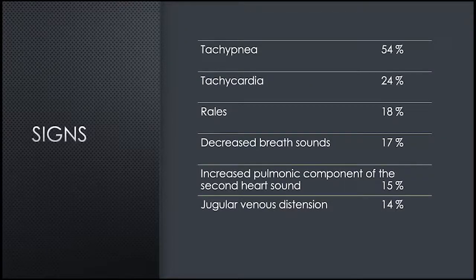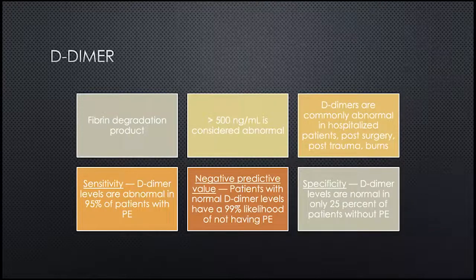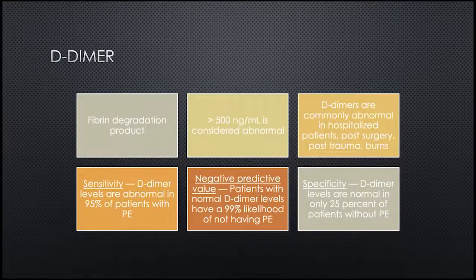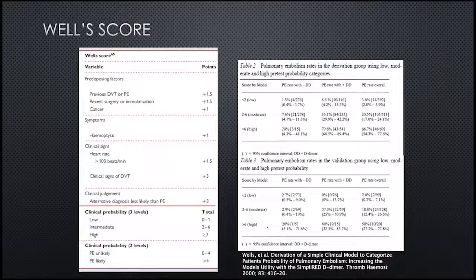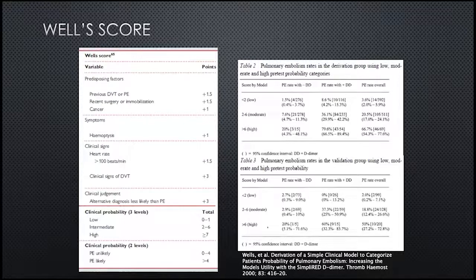Signs can include tachypnea, which is most common, tachycardia, rales, decreased breath sounds, et cetera. The D-dimer is often drawn in the emergency department. Its negative predictive value is very high, and the sensitivity is also very high, but specificity is unfortunately low. We also shouldn't be drawing D-dimers in patients who have had recent surgery, trauma, or burns. Dr. Wells out of Canada came up with a pre-test probability calculator that helps us understand if we have a low, moderate, or high likelihood of PE. We can add in the D-dimer for an even better understanding.